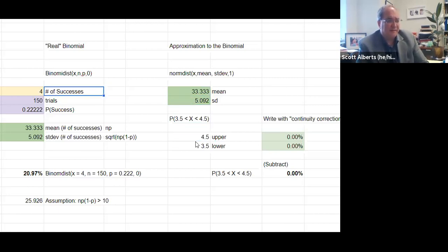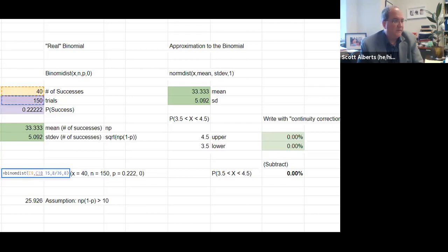Instead of thinking about four successes, let's think about 40 successes. We'll have to change this to get this to work. 40 successes, number of trials is 150, the probability is right there. The probability of getting 40 successes is 3.24%.